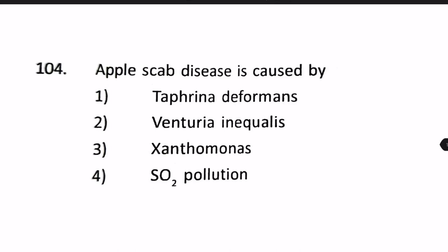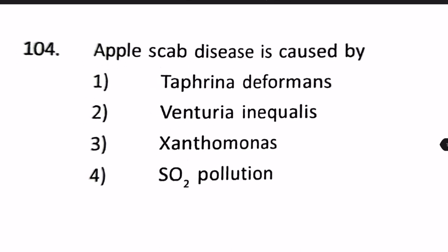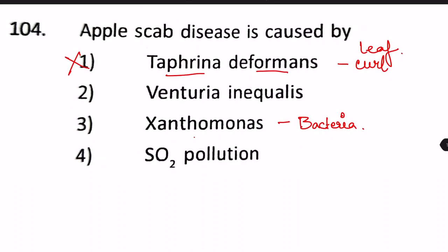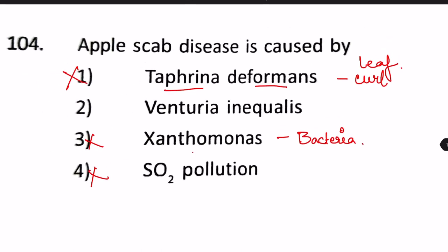Next question: Apple scab disease is caused by — a tricky question. We can rule out options: Taphrina deformans causes leaf curl disease, so that's not the answer. Xanthomonas is a bacterium that causes citrus canker and other diseases. SO2 pollution doesn't cause apple scab. The answer is Venturia inaequalis, which causes apple scab disease.